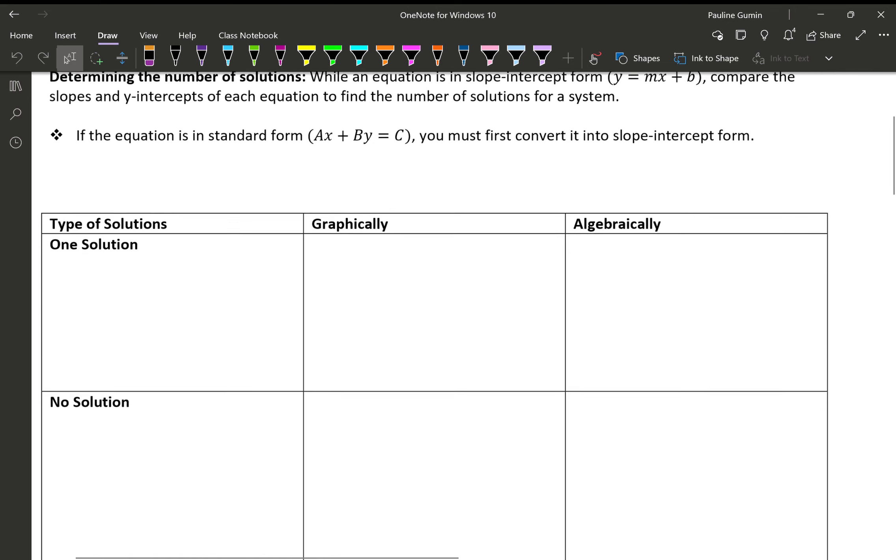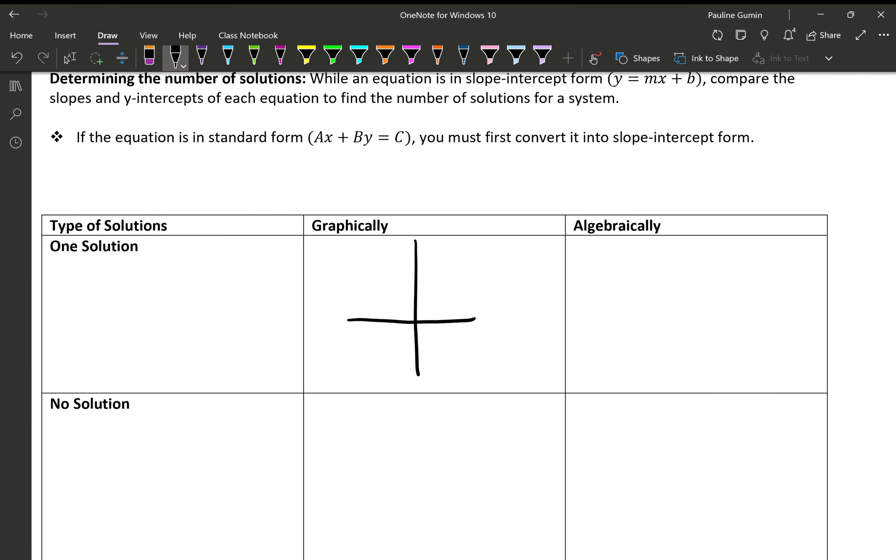Sometimes we get one solution. Graphically, if this is our quadrants, we'd have one line somewhere here, and then they would cross at some point like this, and we would have an answer, and the answer would be wherever they cross. Algebraically, these would look like two equations with different slopes. I don't know, y equals 4x plus 5, y equals negative 3x minus 7. So the slopes are different. If the slopes are different, they will absolutely cross each other.